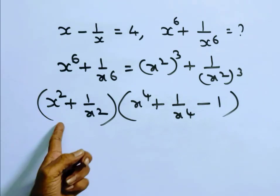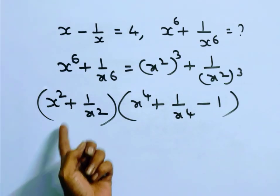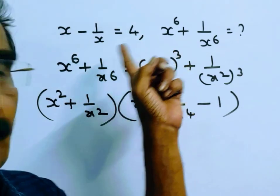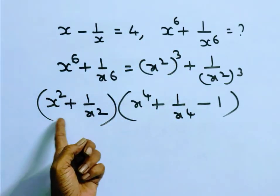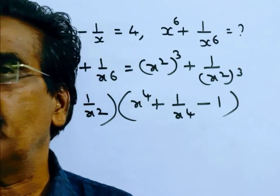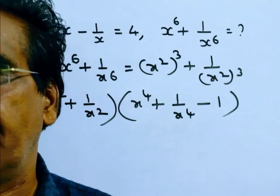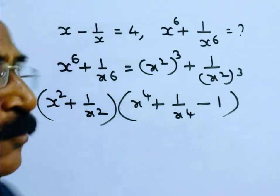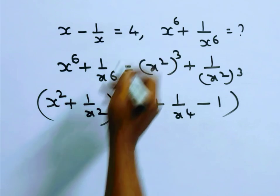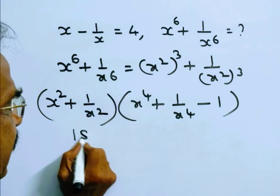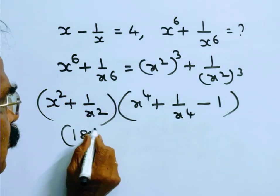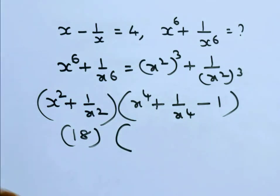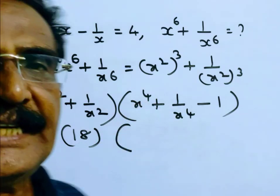Now, x squared plus 1 by x squared: since x minus 1 by x is equal to 4, x squared plus 1 by x squared is equal to (x minus 1 by x) whole square plus 2, so 4 squared plus 2, that is 16 plus 2 equals 18. So x squared plus 1 by x squared is equal to 18.